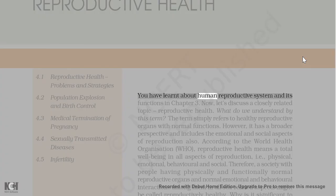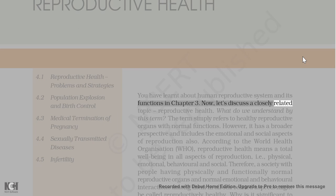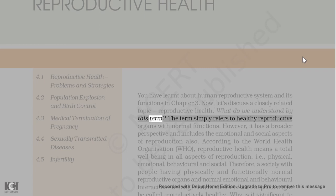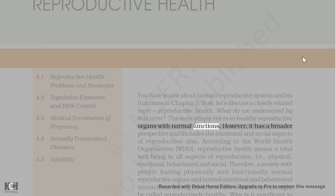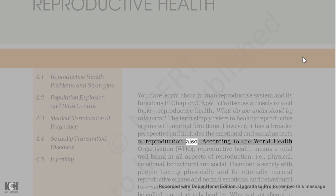You have learned about the human reproductive system and its functions in Chapter 3. Now let's discuss a closely related topic: reproductive health. This term simply refers to healthy reproductive organs with normal functions. However, it has a broader perspective and includes the emotional and social aspects of reproduction as well.